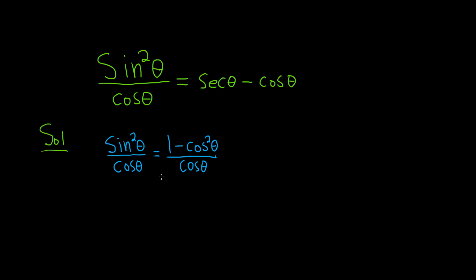Now we can break this up using properties of subtraction, or just properties of fraction subtraction. So this is 1 over cosine, and then minus cosine squared of theta over cosine of theta.